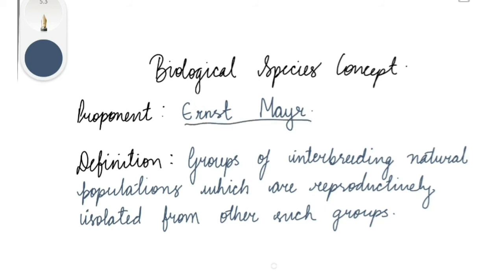The biological species concept was proposed by Ernst Mayr, who defined species as groups of interbreeding natural populations which are reproductively isolated from other such groups. The emphasis is on whether organisms can interbreed — if they can, they belong to the same species; if not, they do not. This is advantageous because, unlike the taxonomic concept where morphological characters are subjectively assessed, the interbreeding criterion is fairly objective.